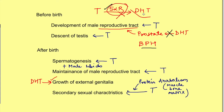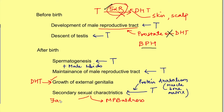The enzyme 5-alpha reductase is also present in cells of the skin and scalp. So if it is present in the scalp, male pattern baldness will be due to dihydrotestosterone. Similarly, growth of facial hair, development of acne, and hairline recession are all due to DHT, because this enzyme is present in skin and scalp.